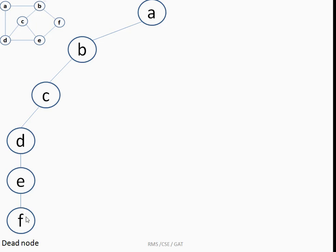Since we can't reach A from F, F is a non-promising node. We backtrack to parent E. For E, adjacent vertices are C, D, and F — all are visited, so no option from E. We backtrack to D. For D, adjacent vertices are A, C, and E — all visited, no option. We backtrack again to C.